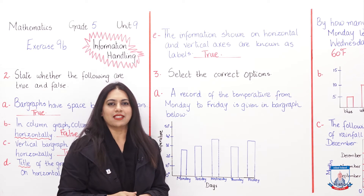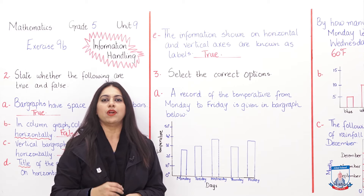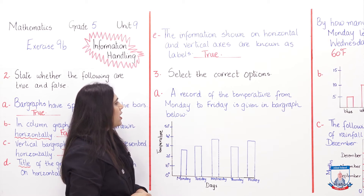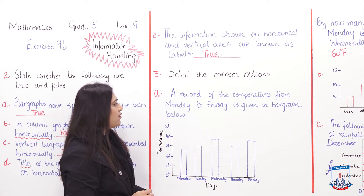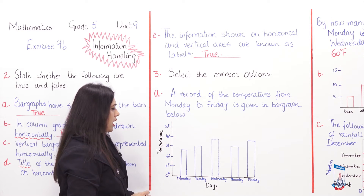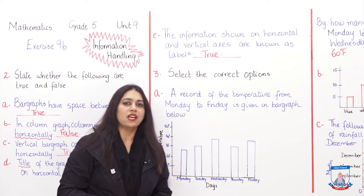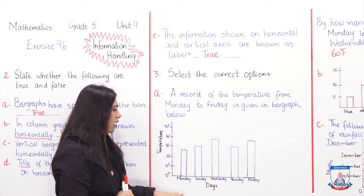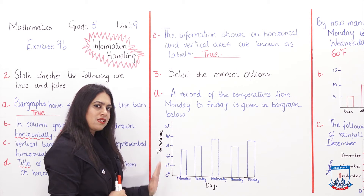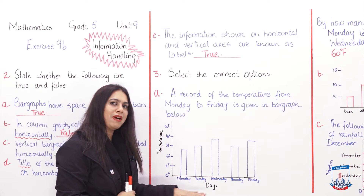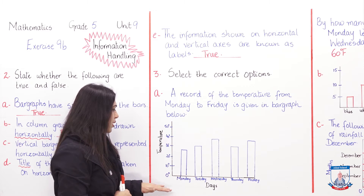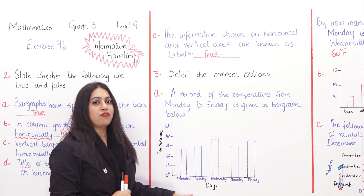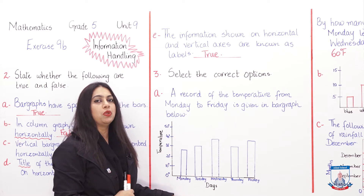Let's move to question number three: select the correct option. We will read each question and pick the correct answer. Part A: 'A record of the temperature from Monday to Friday is given in the bar graph below.' You can see a bar graph where the x-axis shows the days Monday to Friday and the y-axis shows temperature in degrees Fahrenheit. There are different questions that can be asked related to this bar graph.